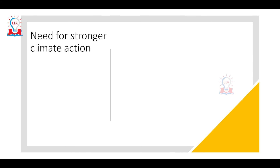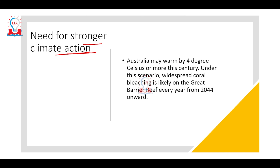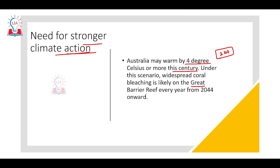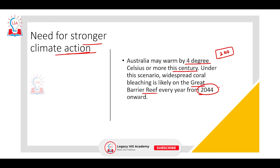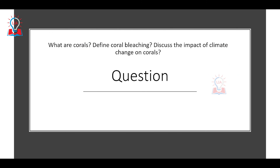To solve this problem, stronger climate action is required — we need to step up our goals and move towards sustainable development. Australia may warm by 4°C or more by the end of this century. Under this scenario, widespread coral bleaching is likely to affect the Great Barrier Reef every year from 2044 — just 22 years away — if emissions continue at the current rate.